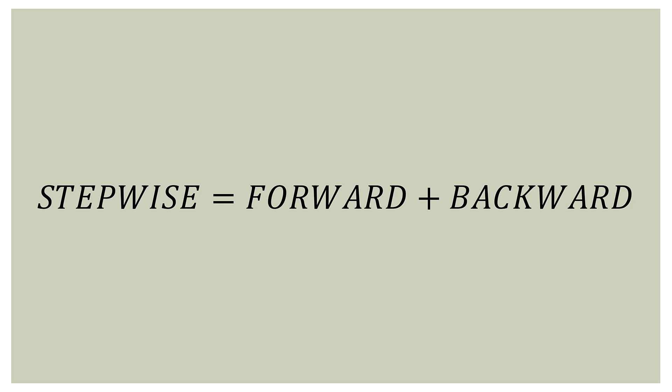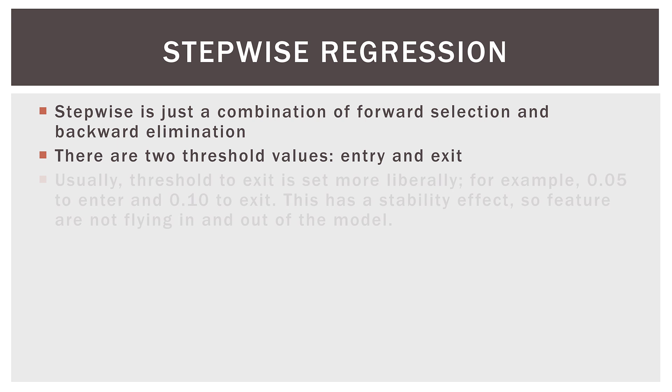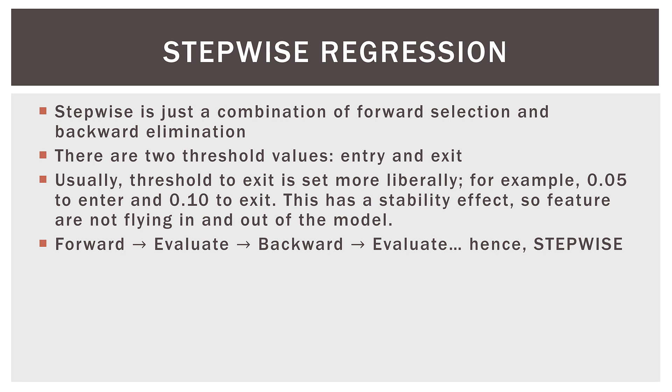So if we were to sum up this video in one slide, it's this: stepwise regression is just forward selection and backward elimination combined into one process. Stepwise is just a combination of forward and backward. There are two threshold values this time — one for entry and one for exiting the model. Usually the threshold to exit is set a bit more liberally. For example, we might have 0.05 to enter and 0.10 to exit. What this does is make the model a bit more stable, so we don't have feature variables just flying in and out of the model everywhere.